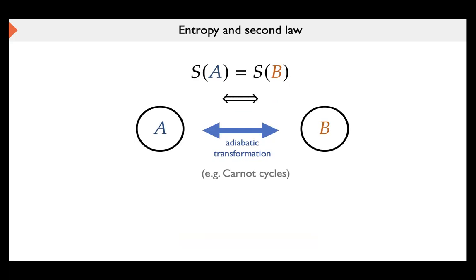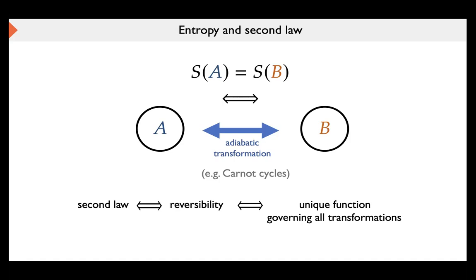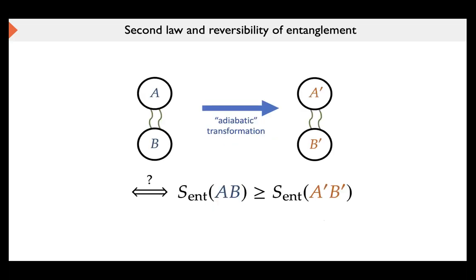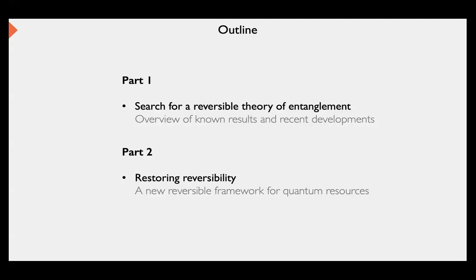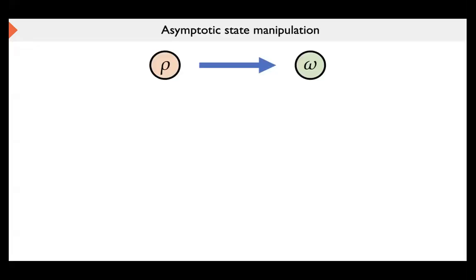For the purposes of this talk, I will consider these ideas essentially equivalent — by the second law I mean the stronger statement with 'if and only if.' Now we want to see if there is a unique entropic function that can govern the convertibility of entanglement in the same way as entropy does for thermodynamics. The talk is broadly divided into two parts: first, the history of the search for a reversible theory of entanglement, and second, our recent results introducing a new framework for reversible manipulation of quantum resources.